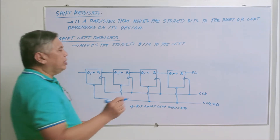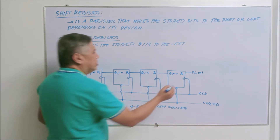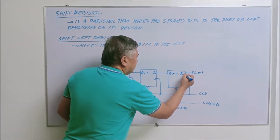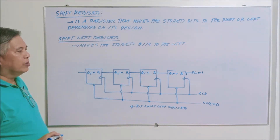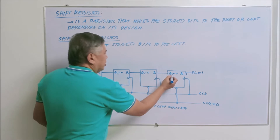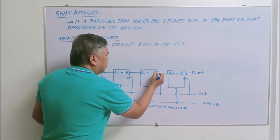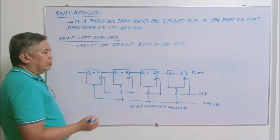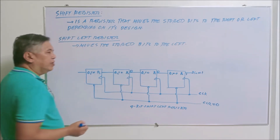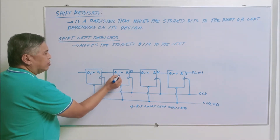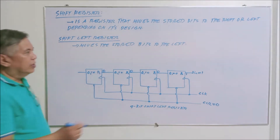Now if your D input is one, that means that since the input is connected directly to D sub zero, D sub zero will have an input of one. Whereas D sub one, which is directly connected to Q sub zero, will have a value of zero. D sub two, connected to Q sub one, has a value of zero, and D sub three, connected directly to Q sub two, will also have a value of zero.